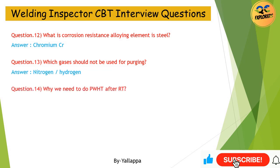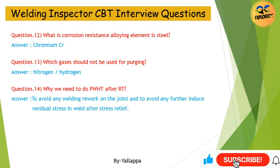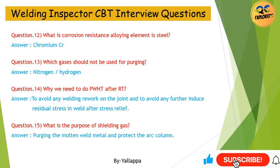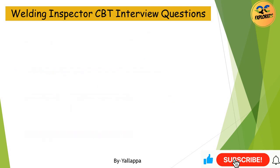Question 14: Why do we need to do PWHT after RT? Answer: To avoid any welding rework on the joint and to avoid any further induced residual stress in the weld after stress relief. Question 15: What is the purpose of shielding gas? Answer: Purging the molten weld metal and protecting the arc column.